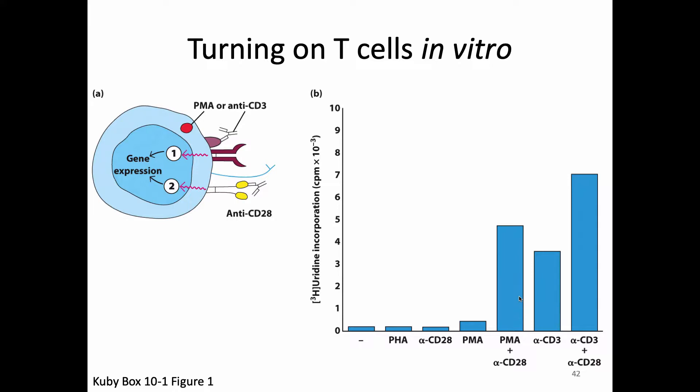Looking at T-cell proliferation data: if we give our cell nothing, cells don't really proliferate. Giving PHA, which leads to T-cell receptor signaling, gives very little proliferation. Giving just anti-CD28 gives very little. PMA, which stimulates the MAP kinase pathway and acts like signal 1, turns on the cells a little bit. But PMA plus anti-CD28 gives much better activation because we've given signal 1 and signal 2. An antibody against CD3 can also turn on all T-cells, and adding anti-CD28 gives very good activation.